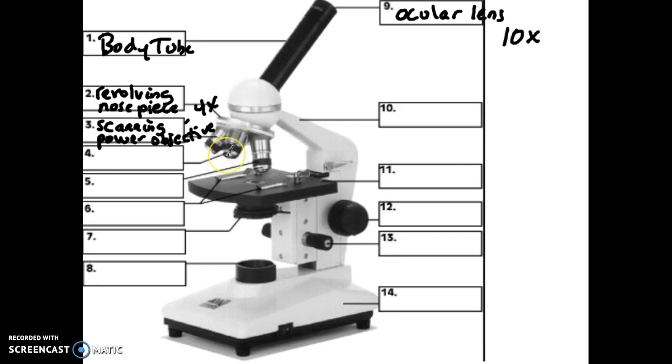Number four, which is this middle, this is actually low power. Most often, your low power is 10 times the size, so it has the same magnification power as the ocular lens. And finally, your high power.